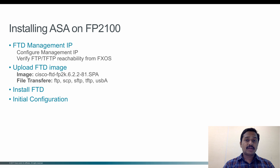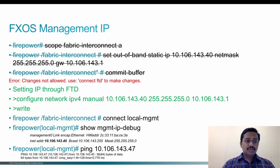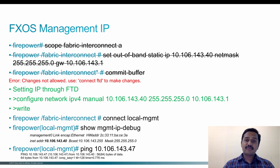This is unlike when you have Firepower 2100 with ASA, where you are allowed to change the IP address of the management from the FXOS prompt. As you can see here, the first four lines show that though you can go to the FXOS prompt, go to the fabric interconnect, and set the IP address, the moment you give the command 'commit buffer' to apply the changes, the system is going to give you an error saying that changes are not allowed.